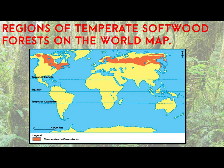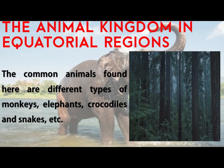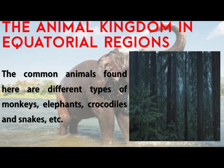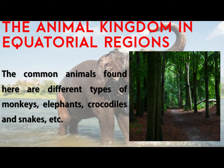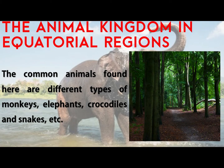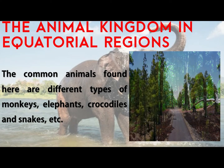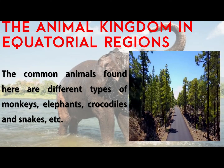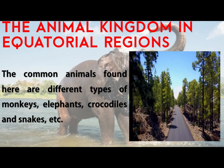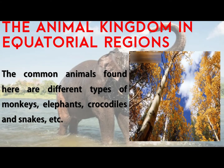We are living in the biosphere along with plants and animals. In the animal kingdom we have birds, insects, and many types of animals. They vary from place to place because of variation in climatic regions. We have different climatic conditions over different areas.